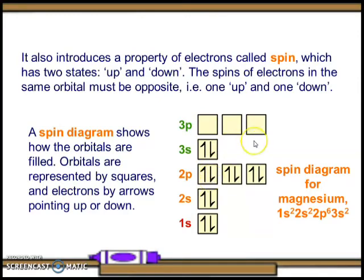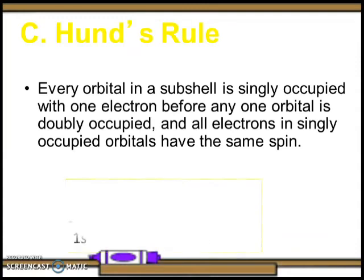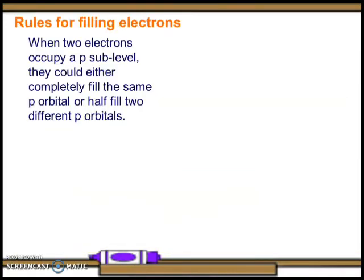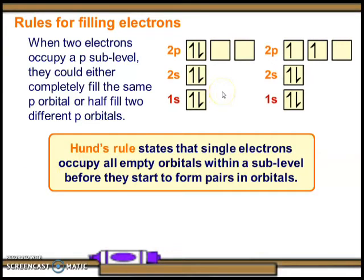A spin diagram shows how orbitals are filled — orbitals are represented by squares and electrons by arrows pointing up or down. For magnesium with electron configuration 1s² 2s² 2p⁶ 3s², the spin diagram illustrates this filling. Hund's rule states that every orbital in a subshell is singly occupied with one electron before any orbital is doubly occupied, and all electrons in singly occupied orbitals have the same spin. Three electrons occupy three orbitals of equal energy individually before pairing begins. Single electrons occupy all empty orbitals within a sub level before forming pairs.